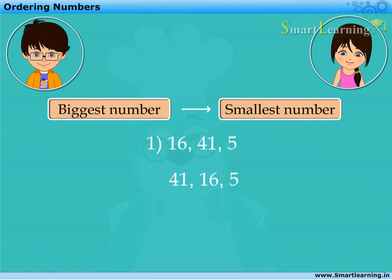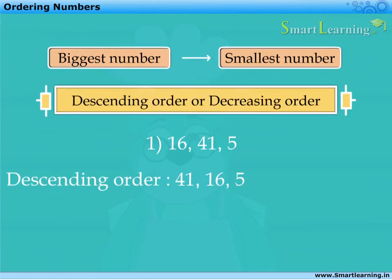This arrangement of numbers is called descending order or decreasing order.